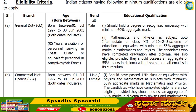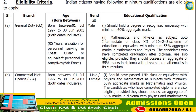Education qualification for General Duty: candidates should hold a degree from a recognized university with 60% aggregate marks. You should also have passed 12th standard with Physics and Mathematics as subjects with a minimum of 55% aggregate marks in Mathematics and Physics. Candidates who have completed graduation after a diploma are also eligible, provided they possess an aggregate of 55% marks in diploma with Physics and Mathematics in its curriculum.